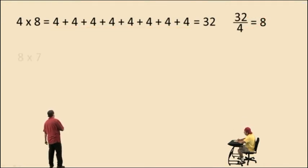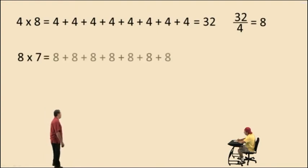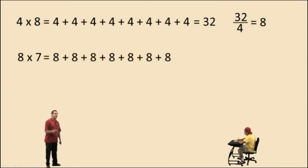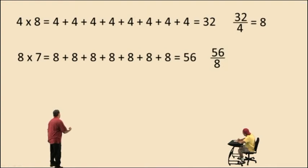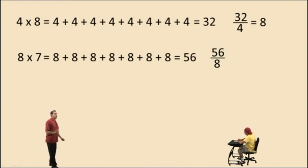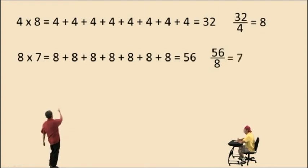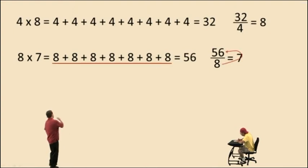What about 8 times 7? There are 7 eights being added together, and that's 56. 56 divided by 8 is asking you how many 8's go into 56. It's obviously 7 — that's because 8 times 7 is 56.